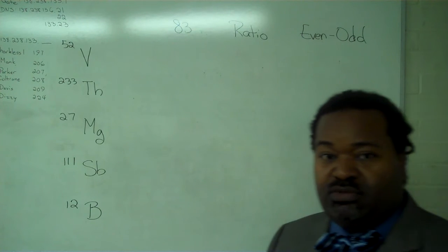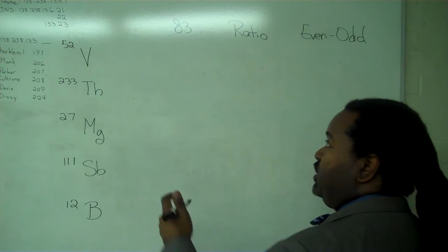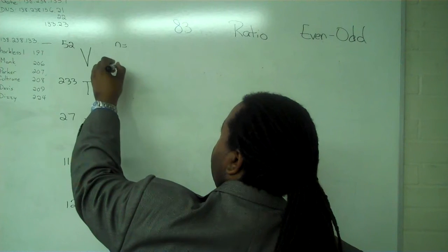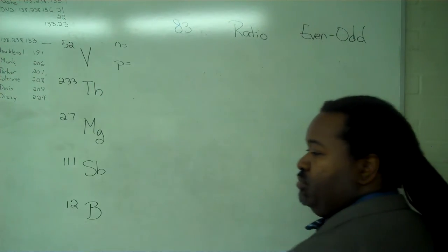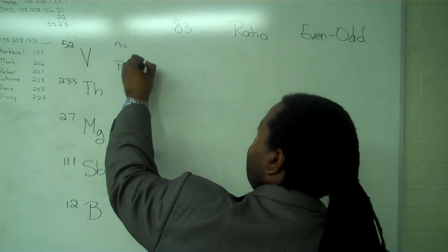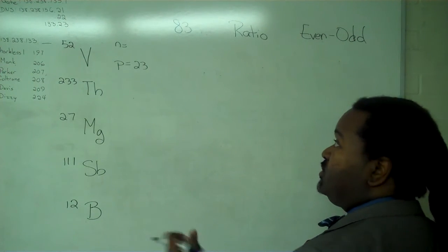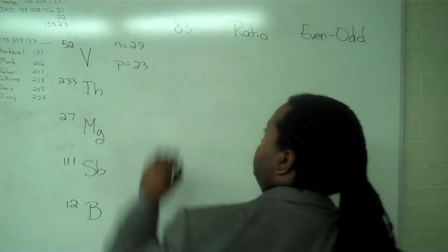So the first thing to do in order to do any of these is to actually determine the number of neutrons and protons. So for the vanadium-52, we can get the number of protons from its atomic number, which is 23. And 23 plus the number of neutrons will give us 52, so we have 29 neutrons.